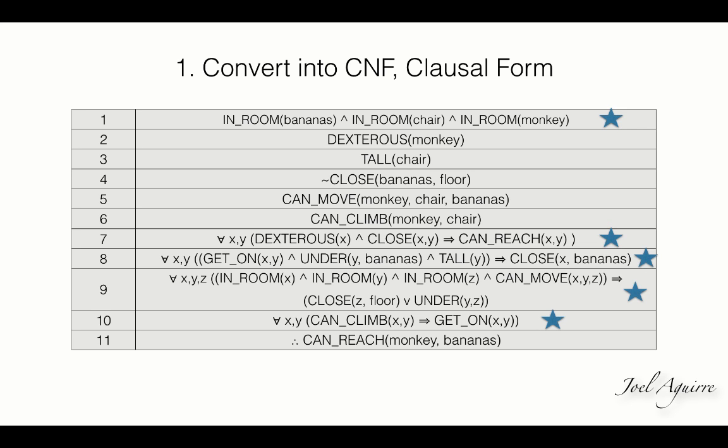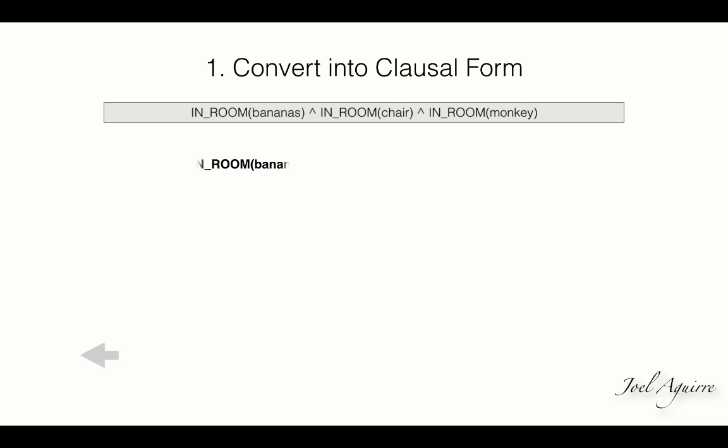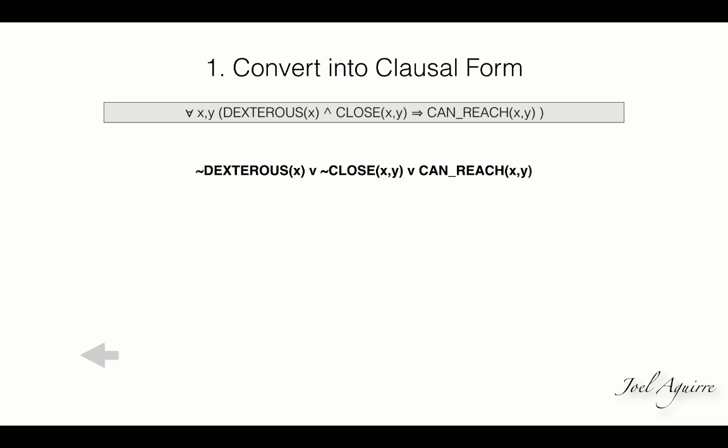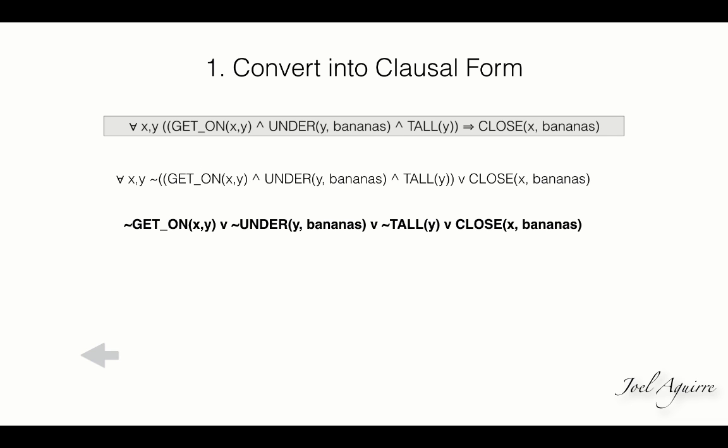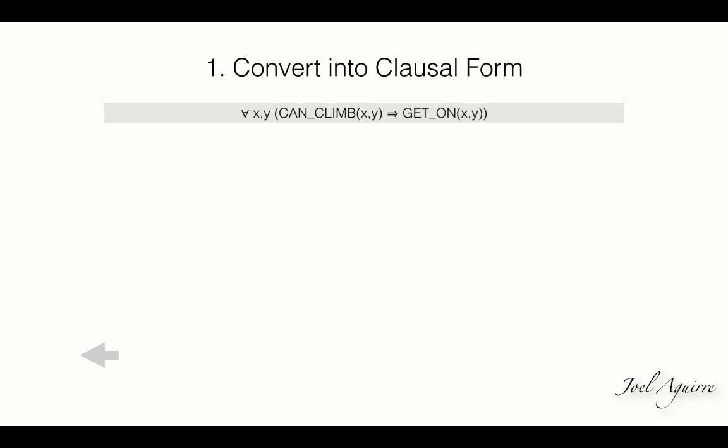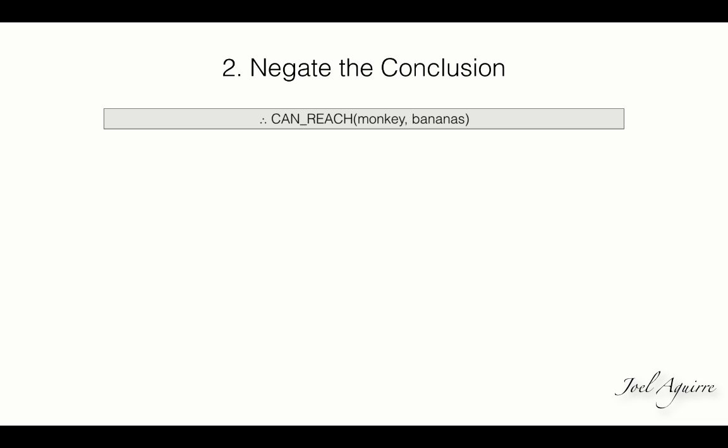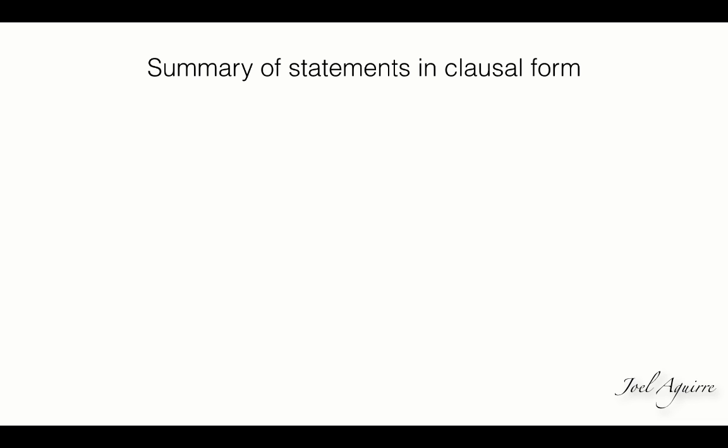Statement 1 can be broken down into three expressions by simplification. The conjunction and implication symbols in statements 7, 8, 9, and 10 can be converted to disjunctions by De Morgan's law and material implication. The next step is to negate the conclusion. Here's the list of all the statements converted to clausal form.